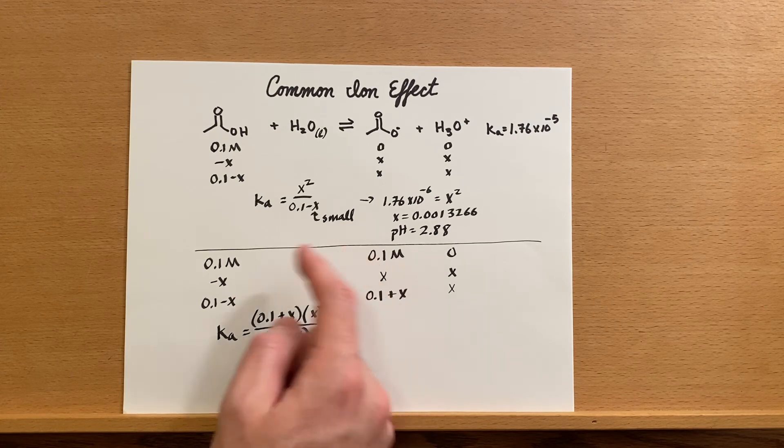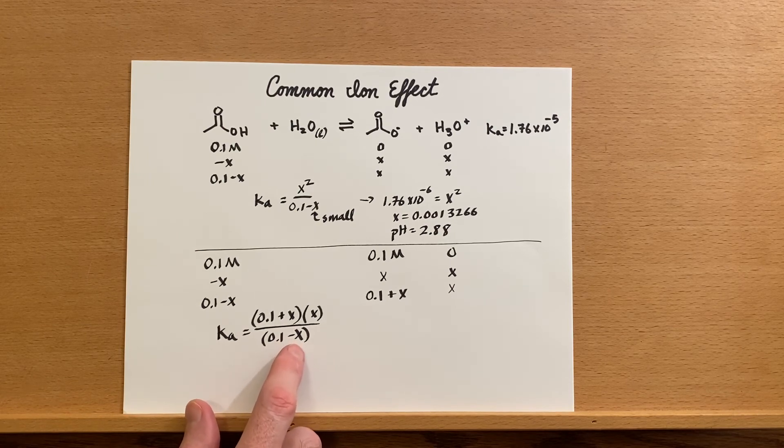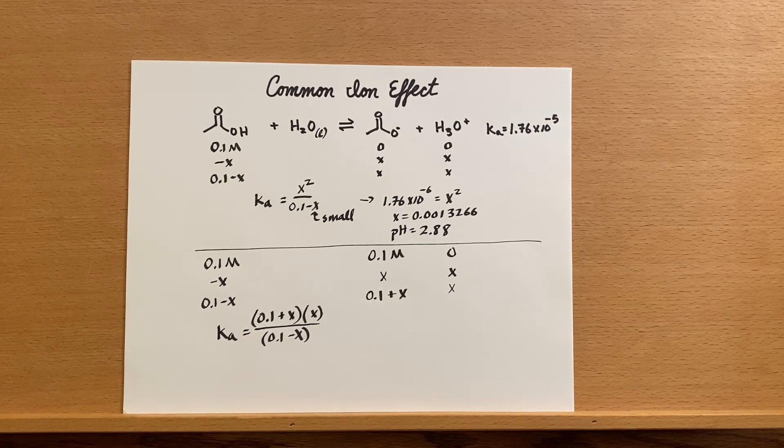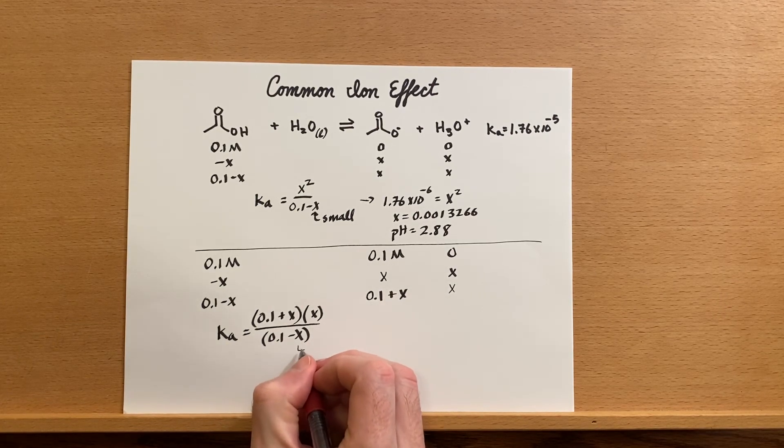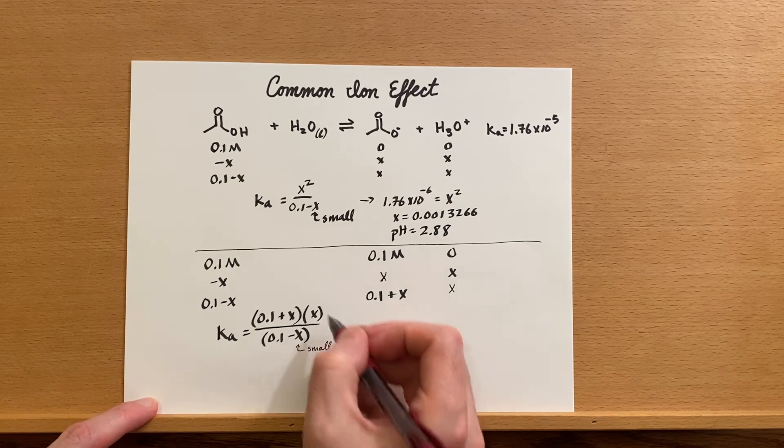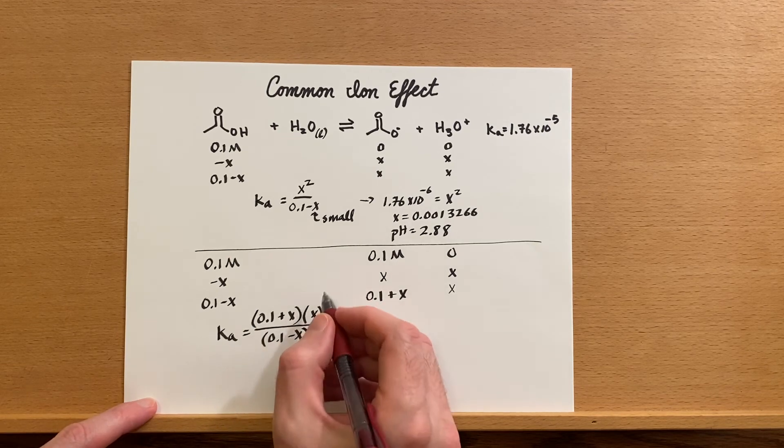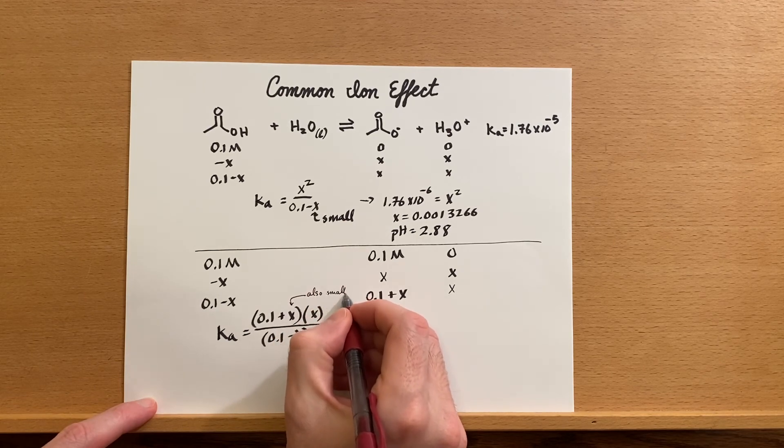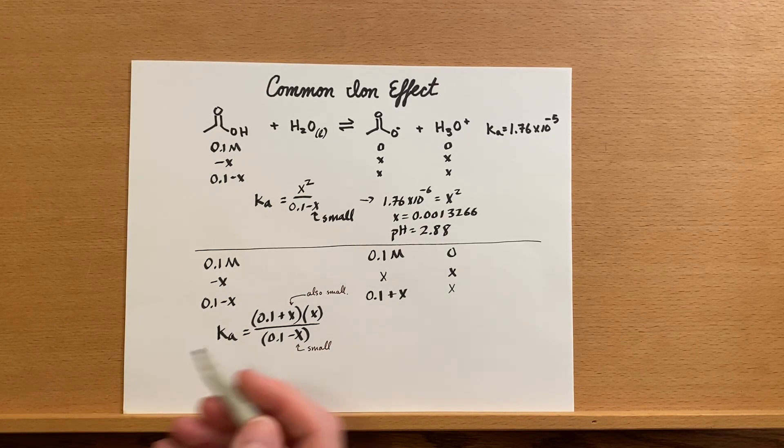We add some of this in, it's going to shift back that way. So in this case we could ignore the minus X right here, but that's not the only place we could ignore it. There's also a plus X right up here: 0.1 plus X, 0.1 minus X. Well, this right here is small. This is also small—it's still X and it's small in relation to 0.1, so we can also ignore this. When we go to solve this, we can actually simplify it down quite a bit.